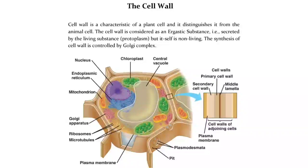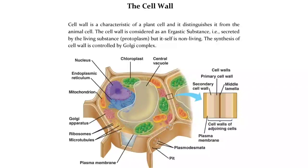The cell wall is a characteristic of a plant cell and it distinguishes it from the animal cell. The cell wall is considered as an ergastic substance, i.e., secreted by the living substance, protoplasm, but itself is non-living. The synthesis of cell wall is controlled by the Golgi complex.